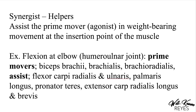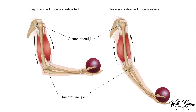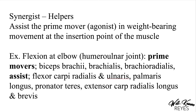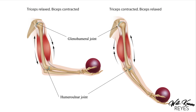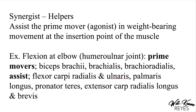Moving on to synergists — these are the helpers. They assist the prime mover at the insertion point of the muscle. Going back to flexion at the elbow at the humeral-ulnar joint — where the humerus and ulna meet — the prime movers are the biceps brachii, brachialis, and brachioradialis.